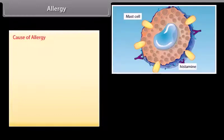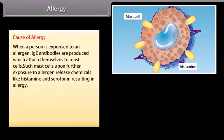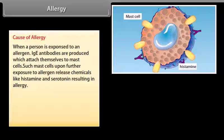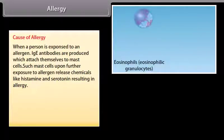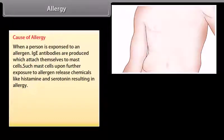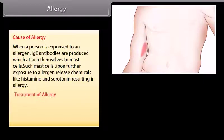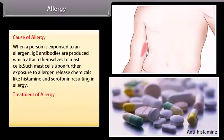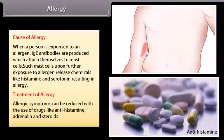When a person is exposed to an allergen, IgE antibodies are produced which attach themselves to mast cells. Such mast cells, upon further exposure to allergen, release chemicals like histamine and serotonin, resulting in allergy. Allergic symptoms can be reduced with the use of drugs like antihistamines, adrenaline, and steroids.